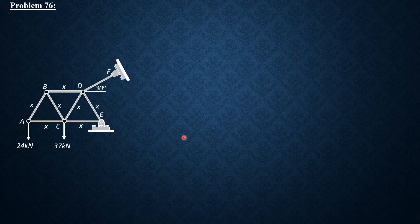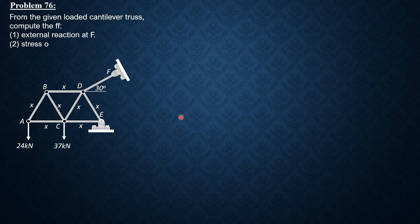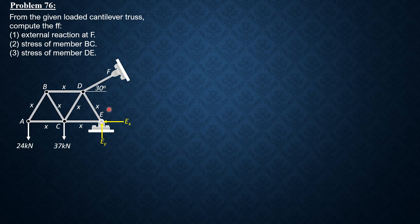For problem 76, this is a loaded cantilever truss. Compute the external reaction at F, the stress in member BC, and the stress in member DE. Since DE is a truss member and a two-force body, its force is along DF, so the reaction at F equals the force in member DF: FDF = RF.